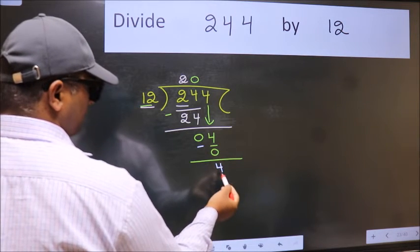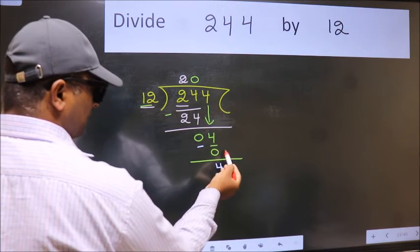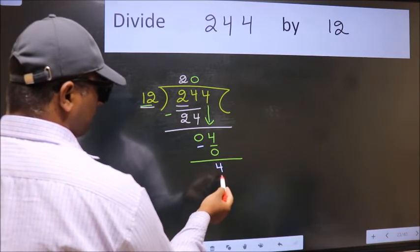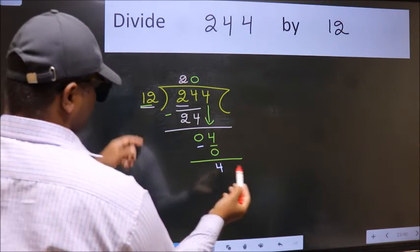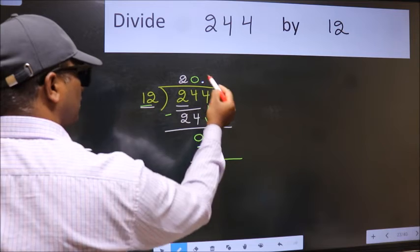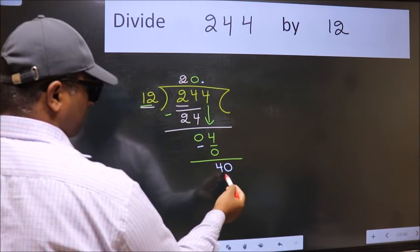Over here, we did not bring any number down. And 4 is smaller than 12. So now we can put dot and take 0. So 40.